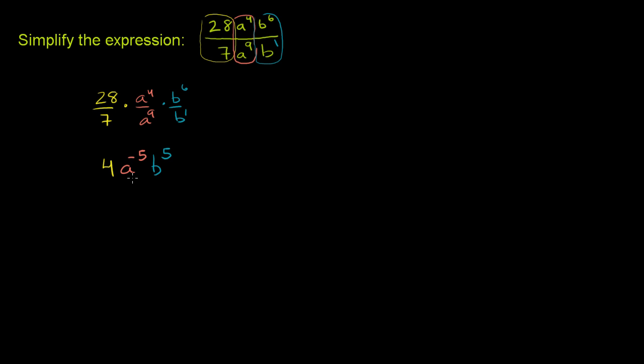And we're done. We've simplified the expression. If you don't want a negative exponent there, you could say, well, this is the same thing as 4 times 1 over a to the fifth. That's the same thing as a to the negative 5. These two things are the exact same thing.